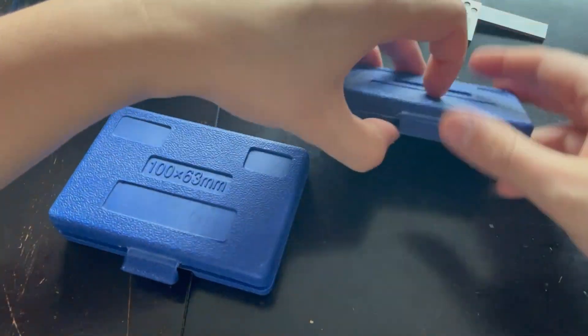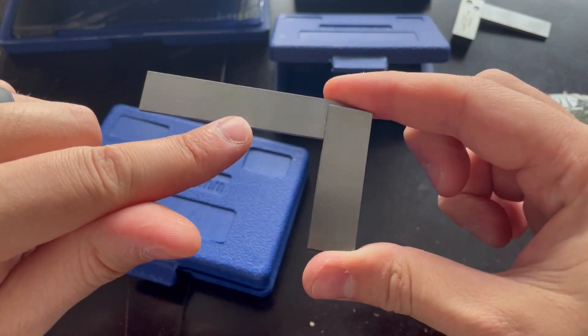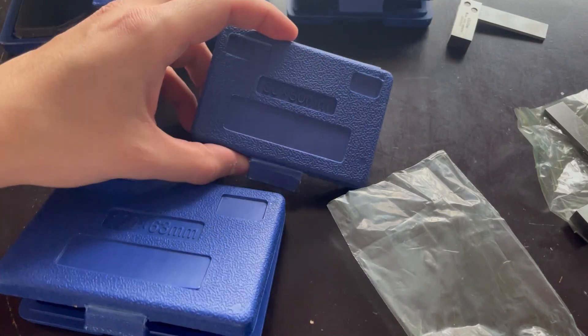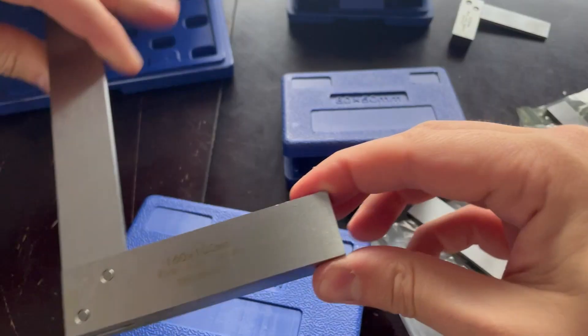But let's open these up and see how they look. They are pre-oiled as you can see. We have 63 by 40 millimeters, we got 80 by 50, 100 by 63, and then 160 by 100. And here's